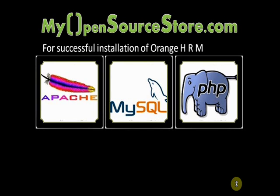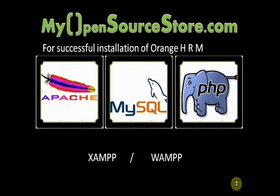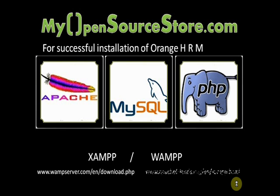If you don't have these in your system, we recommend XAMPP or WAMPP, which is a free software pack that installs Apache, MySQL, PHP, and some more useful software utilities. To download WAMPP for Windows, go to www.wampserver.com/en/download.php. If you want to download XAMPP, go to www.apachefriends.org/en/xampp.html.